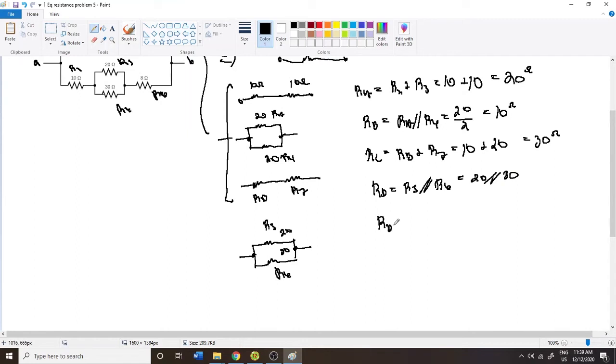Now, this is R5 multiplied by R6, divided by R5 plus R6, and that is 20 times 30, divided by 20 plus 30, which is equal to 2 times 3 times 10 times 10, divided by 50. So this is going to be 100, and 50 is going to go into 100 two times. So it's 2 times 2 times 3, which is 4 times 3, which is 12 ohms.